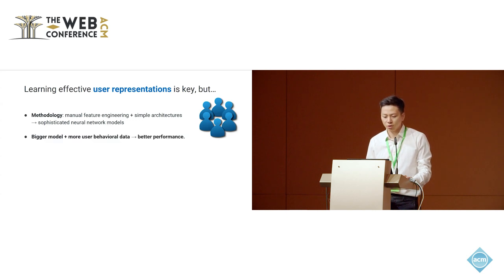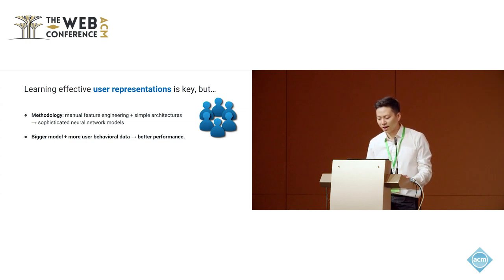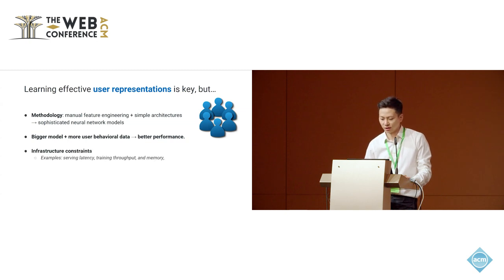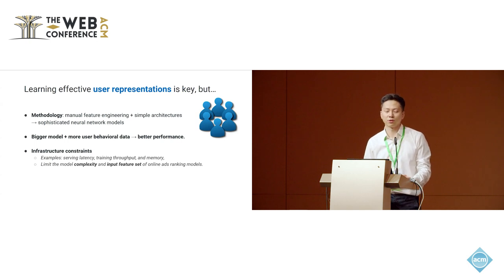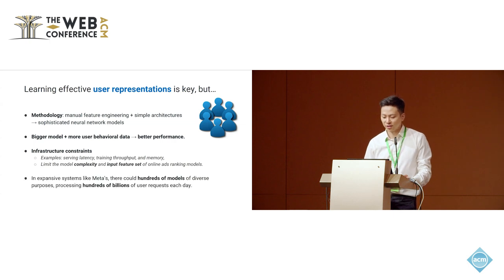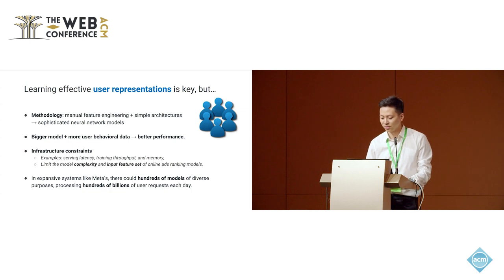A rule of thumb is that a bigger model plus more user behavioral data typically means better performance. This rule of thumb, however, cannot be easily implemented in practice due to various constraints. One major source of constraint is infrastructure constraints, including serving latency, training throughput, host memory, and many more. These infrastructure constraints really limit how complex the model can be and how large the input feature set can be for online ad-ranking models. In expensive systems like Meta, there could be hundreds of models of diverse purposes processing hundreds of billions of user requests each day, making these limitations even more pronounced.